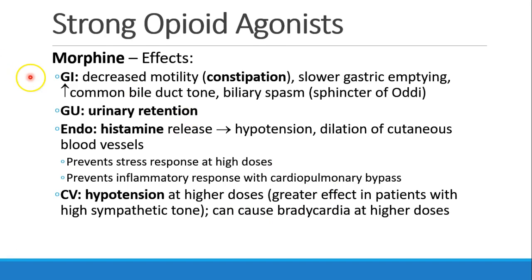In the GI system, morphine decreases motility causing constipation, slows gastric emptying, increases bile duct tone in the common bile duct, and can lead to biliary spasm. It causes urinary retention. Morphine causes histamine release, which can lead to hypotension and dilation of cutaneous blood vessels, causing flushing or rash. At high doses, morphine can prevent the stress response and has been used to prevent the inflammatory response during cardiopulmonary bypass. It can cause hypotension, especially in patients with high baseline sympathetic tone, and bradycardia at higher doses.